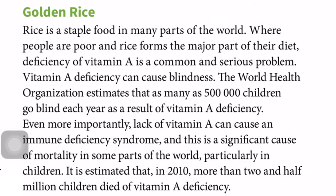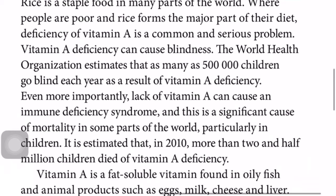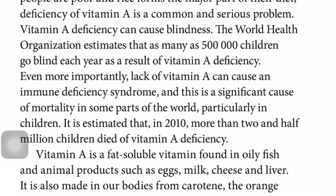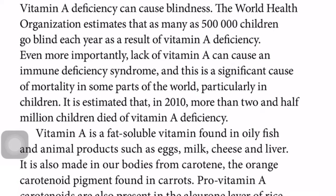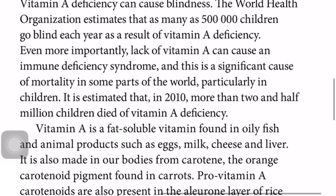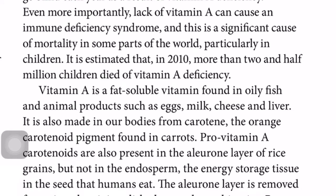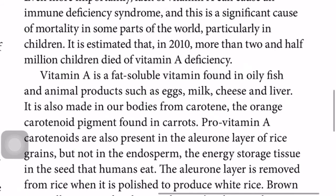Rice is a staple food in many parts of the world where people are poor and rice forms a major part of the diet. Deficiency of vitamin A is a common and serious problem — it can cause blindness. The World Health Organization estimates that as many as 500,000 children go blind each year as a result of vitamin A deficiency. Lack of vitamin A can also cause an immunodeficiency syndrome, a significant cause of mortality in some parts of the world, particularly in children. It is estimated that in 2010 more than two and a half billion children died of vitamin A deficiency.